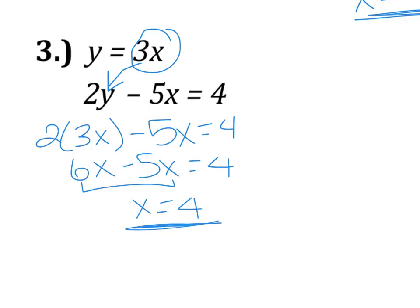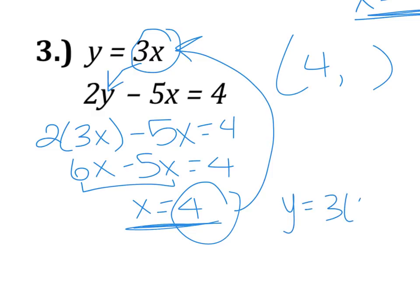Again, we're not done just yet, we just know that first number in our ordered pair is 4. So we're going to take that number and plug it back in here to find our Y. So Y equals 3 times 4, or we can just say Y equals 12. So our ordered pair is 4 comma 12.